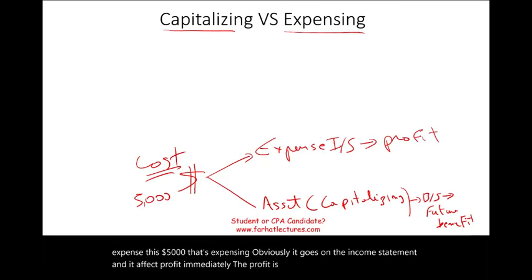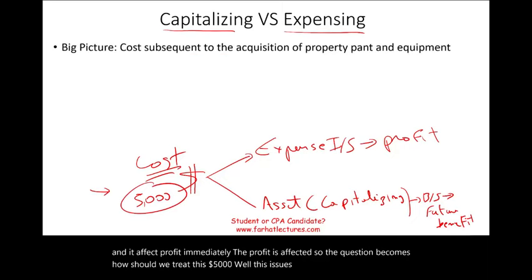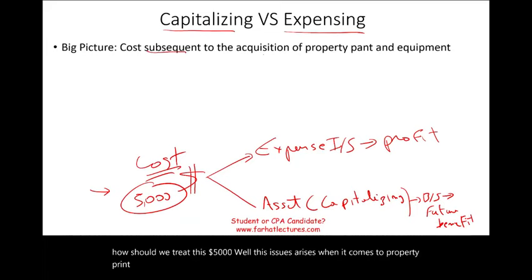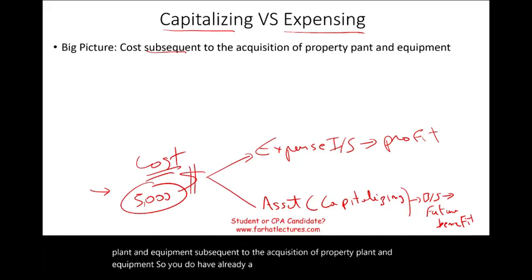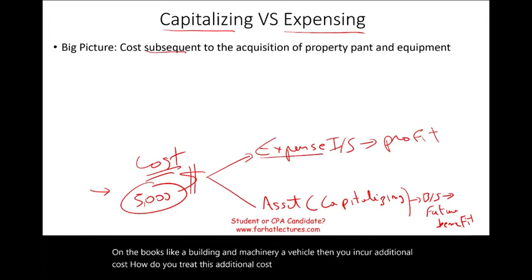So the question becomes, how should we treat this $5,000? This issue arises when it comes to property, plant, and equipment subsequent to the acquisition of property, plant, and equipment. So you already have a property, plant, and equipment on the books — like a building, a machinery, a vehicle — and then you incur additional cost. Do you expense it or do you capitalize it?